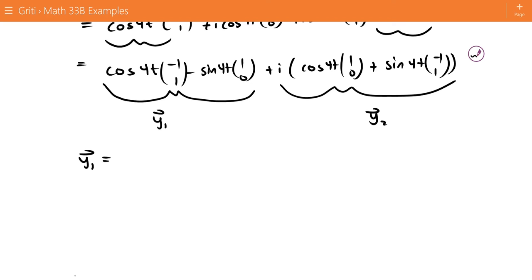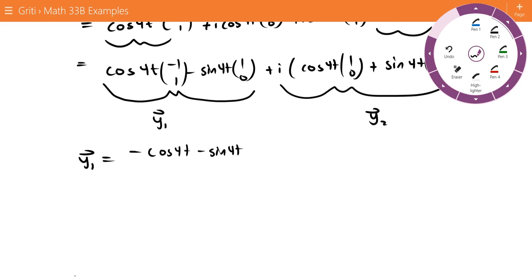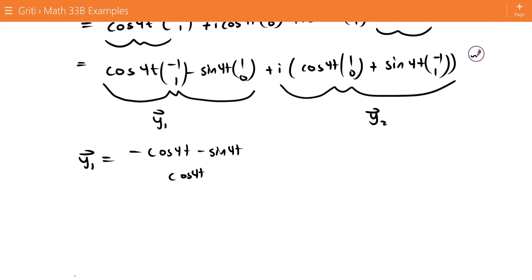We have y1 equaling, we can distribute this out, to negative cosine 4t minus sine 4t, that's the first top component. Then we can distribute the bottom component to get cosine 4t on the bottom. And then y2 is going to be cosine 4t minus sine 4t on top, and then sine 4t on the bottom.